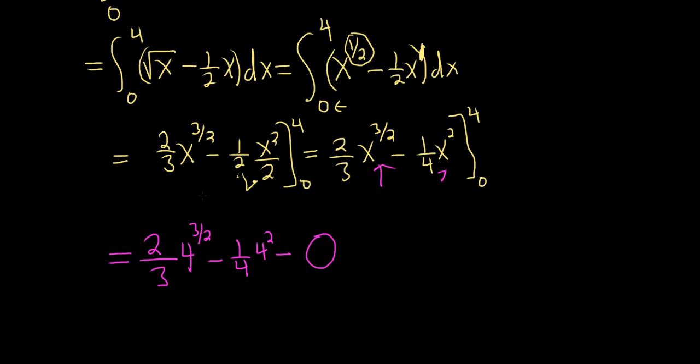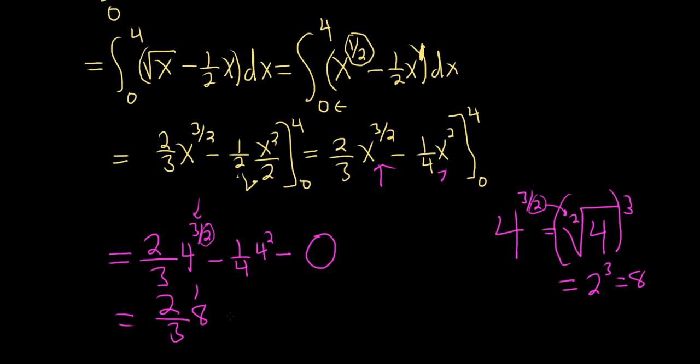4 to the 3 halves. So how do you do that? So 4 to the 3 halves, the way I learned it is that the 4 goes here. And the 2 always goes in the little pocket. And you can put the 3 anywhere you want. So the square root of 4 is 2. So you get 2 cubed, so you get 8. So this is 2 thirds. The square root of 4 is 2. 2 cubed is 8. So you can do it in your head. There's the 8.